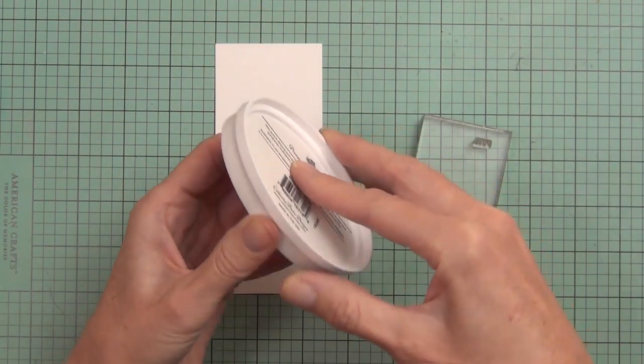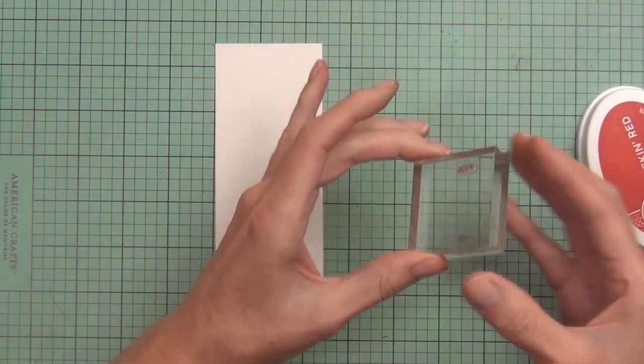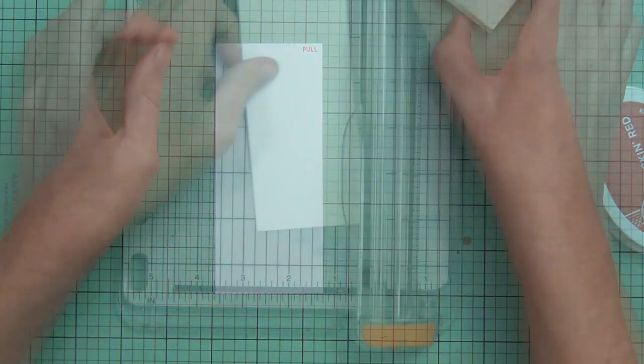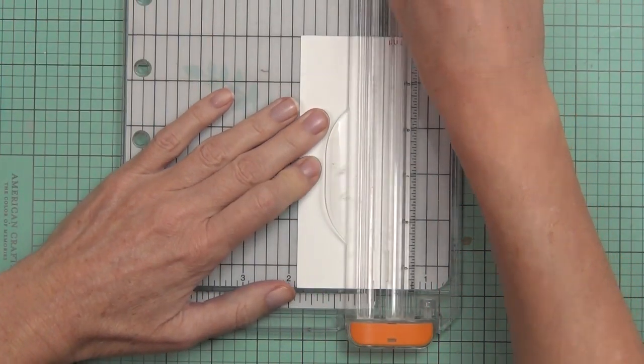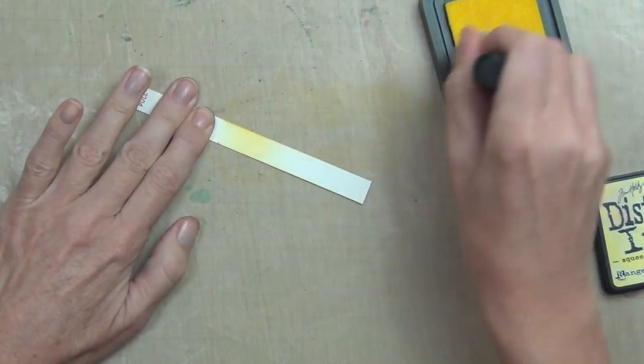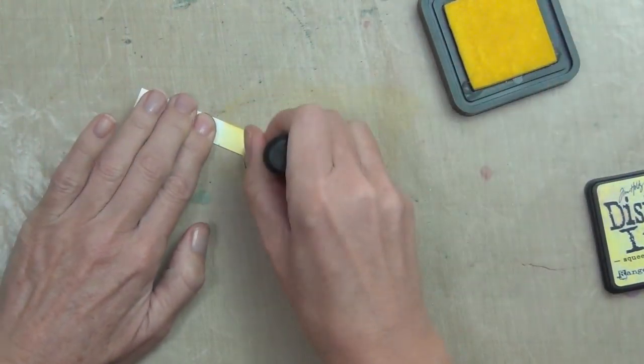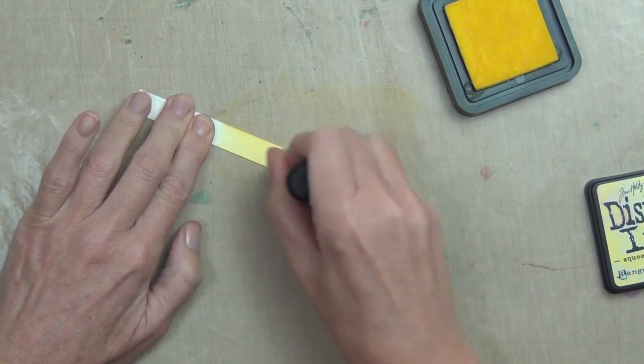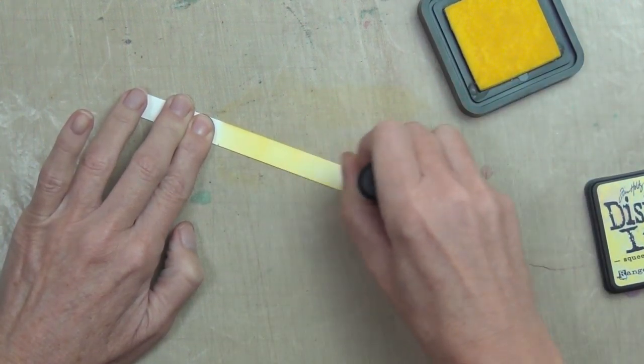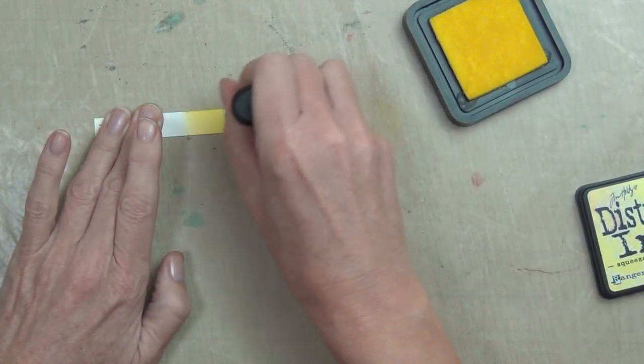Right, I have the perfect sentiment for my pull tab—it says 'pull,' I know, right? You could use an arrow, you could do whatever you like. You don't have to put anything on there and I'm sure they'll work it out. I'm just using a piece of scrap cardstock and I've cut that down.